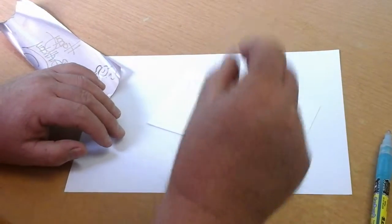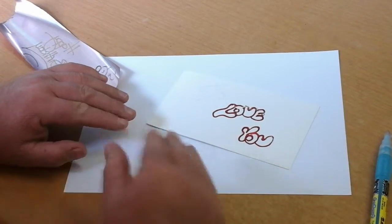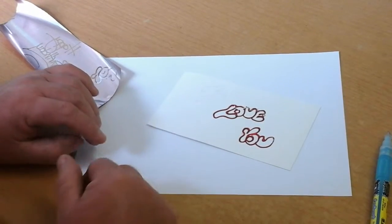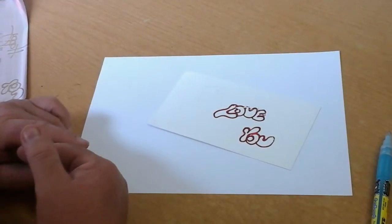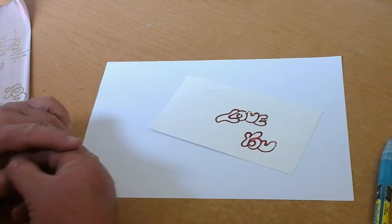So when you're using your glue pen, write slowly, get a nice constant line, wait for the glue to go completely clear before you apply the foil. That simple technique that I've just shown you there will enable you to do some really nice work using your glue pen.